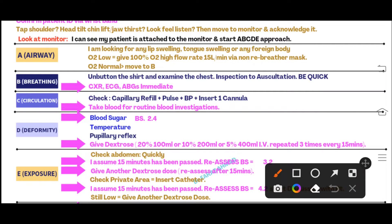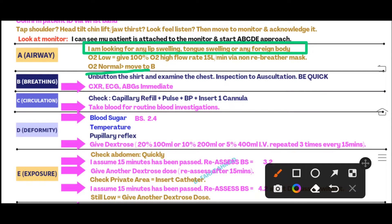For A — Airway: since the patient is not talking, make sure there is no airway obstruction. Verbalize: 'I am going to look for any lip swelling, any tongue swelling, or any foreign body.' After this, look at the oxygen saturation. In most cases of hypoglycemia, oxygen saturation will be normal. Say: 'My patient's oxygen saturation is normal, so I am moving toward B.'